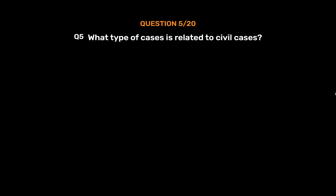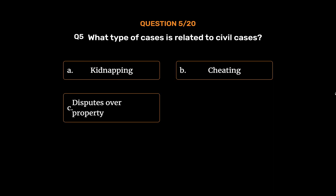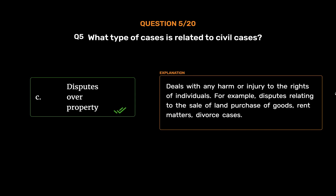Question No. 5. What type of cases is related to civil cases? Option A: Kidnapping. Option B: Cheating. Option C: Disputes over property. Option D: Robberies. The correct answer is Option C: Disputes over property. Civil law deals with any harm or injury to the rights of individuals, for example disputes relating to the sale of land, purchase of goods, rent matters, and divorce cases.